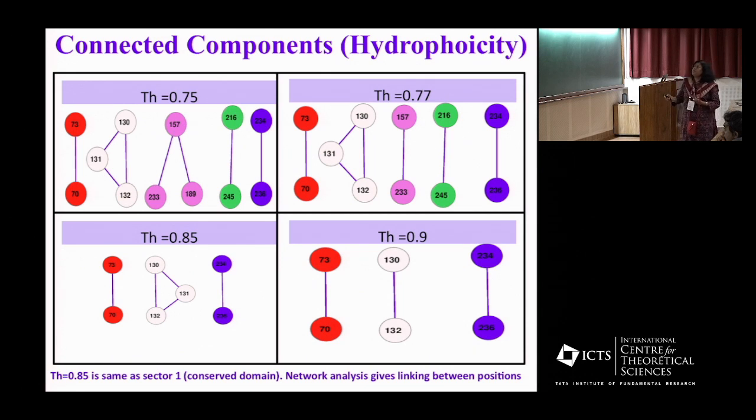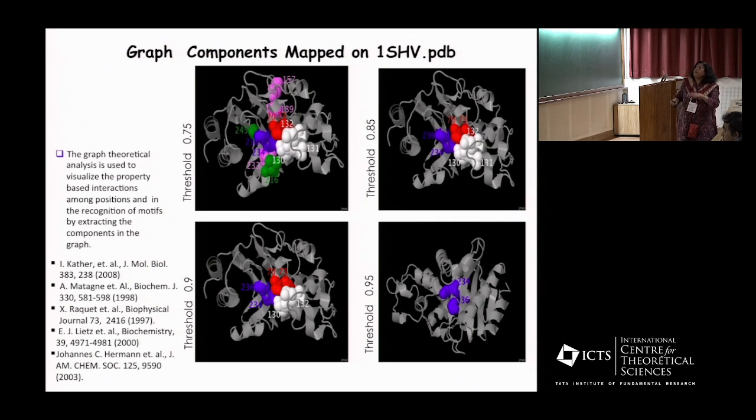I'm focusing here on the hydrophobicity property in which the thresholds are different. Here are the thresholds going from 0.75, 0.77, 0.85, and 1. And you see the structures change. This is hydrophobicity. It turns out that 0.85 corresponds to a conserved domain which you see in experiment. If you put them back into your SHV protein, you see at point 0.75 the structure of those colors that are over here.